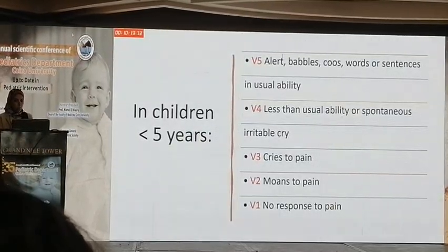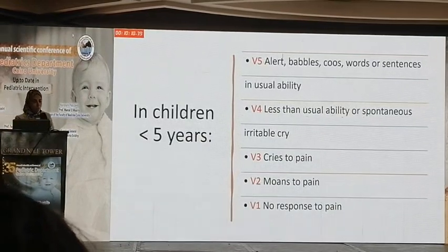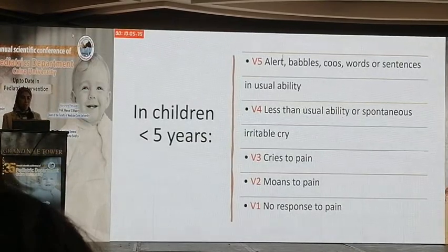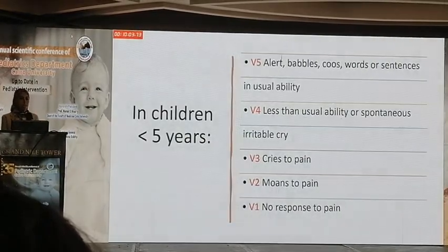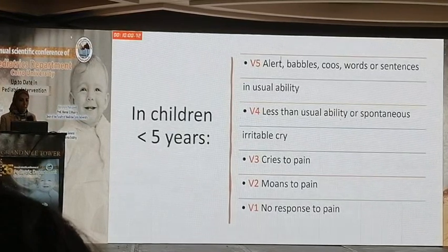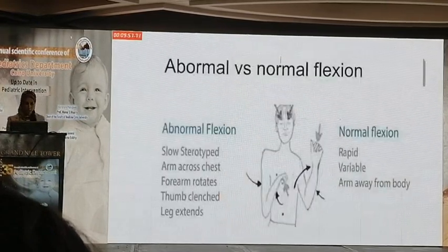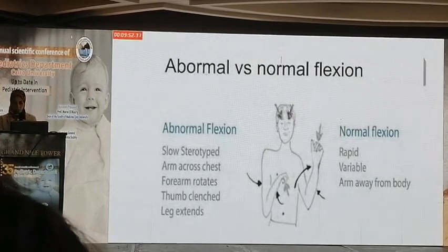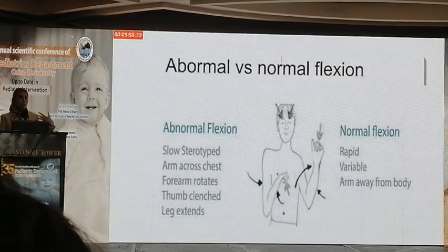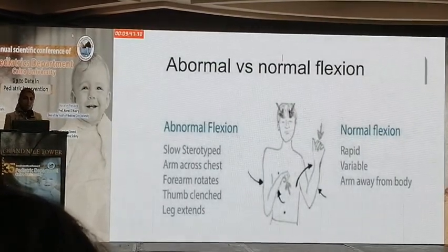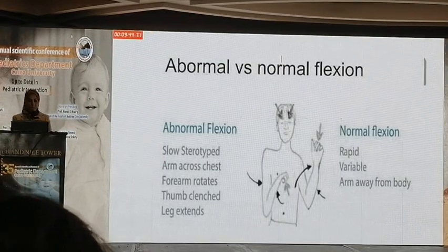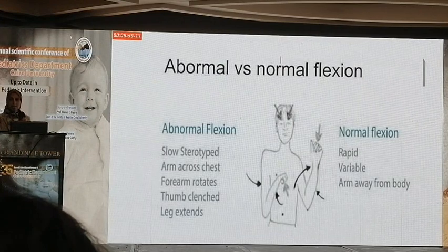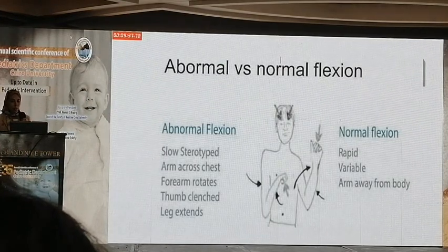This is the modified Glasgow Coma Score for a child less than 5 years. V5 is given to the alert child, V4 when there is less than usual response, V3 when the child cries to pain, and V1 when there is no response. We can differentiate between abnormal and normal flexion: abnormal flexion shows slow stereotyped arm movement across the chest, the forearm rotates, thumb clenches, and leg extends. Normal flexion shows rapid, variable movement of the arm away from the stimulus.